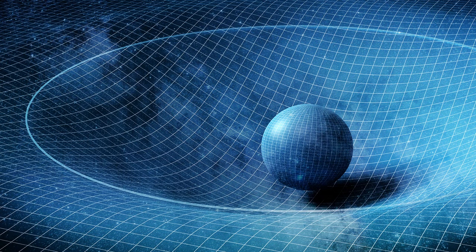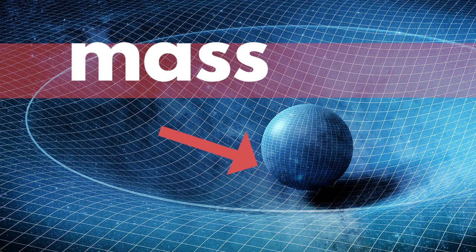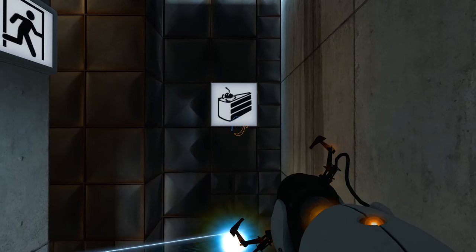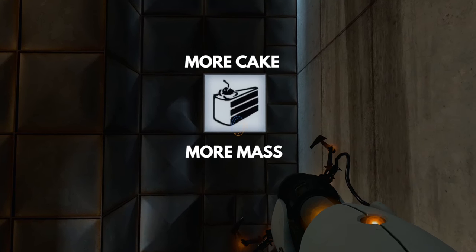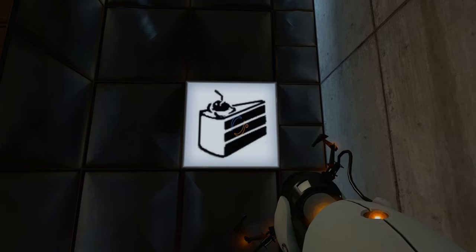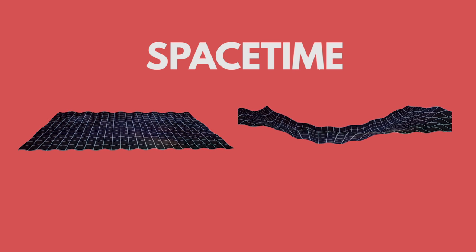See, normally, when space-time curves, it curves in on itself. To do this, you'd need a lot of mass, or the energy equivalent of that mass, to see any noticeable effects — you'd have to eat tons of cake, is what I'm saying. But theoretically, there could be a form of matter or energy that would bend space-time like the surface of a saddle, making wormholes possible.